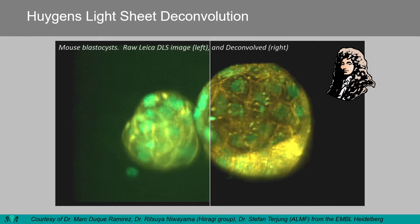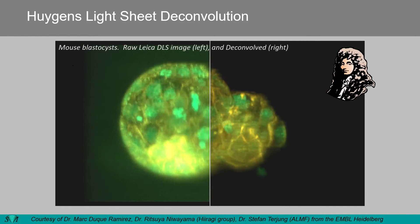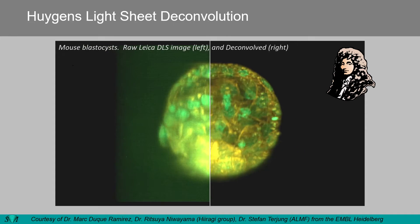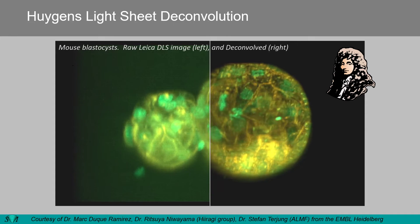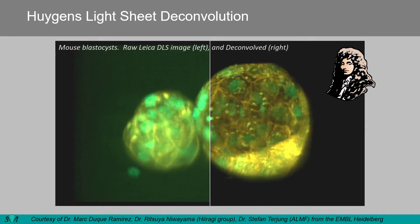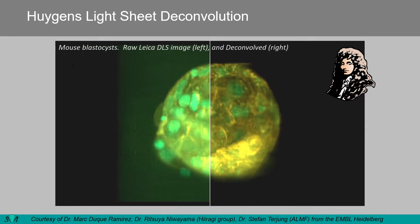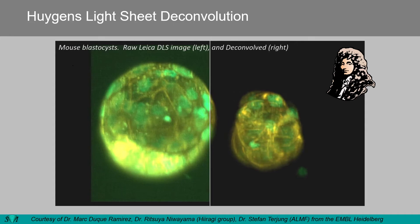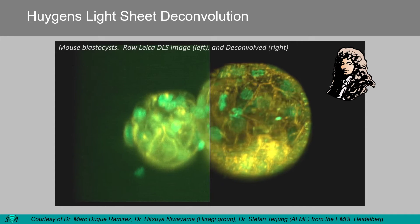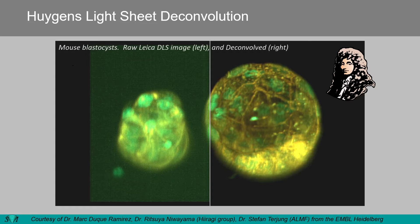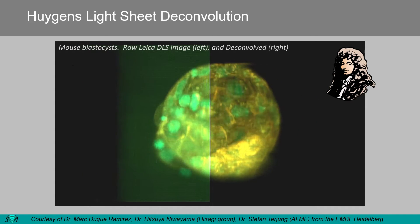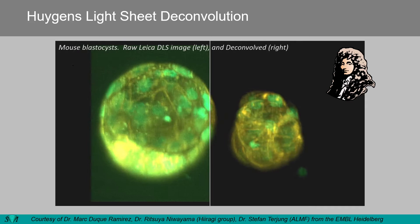This shows the effect of deconvolving a mouse blastocyst image. The movie is a rotating maximum intensity projection, where the left part shows the original image and the right part shows it after deconvolution. The deconvolved image on the right shows that the background is removed, the contrast is improved, and more details are visible.